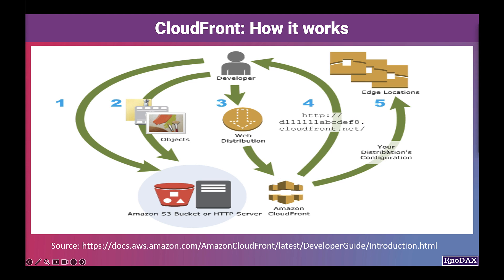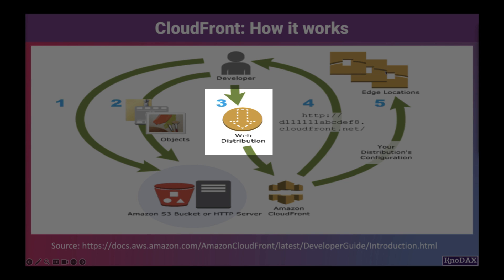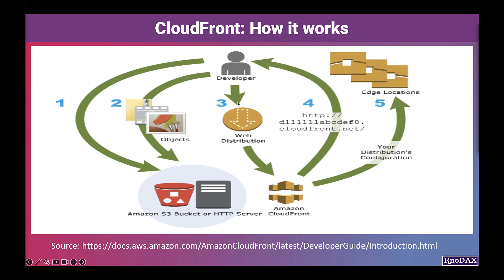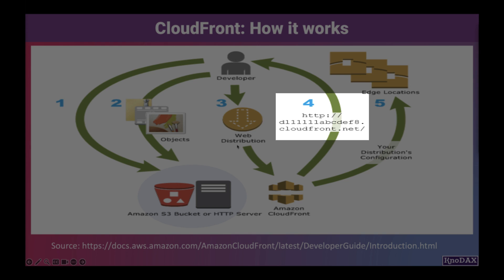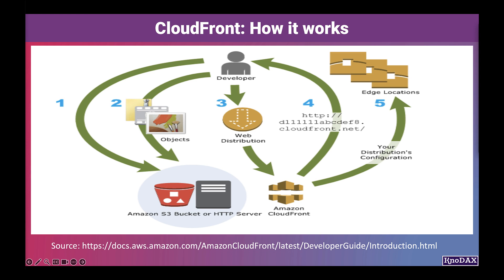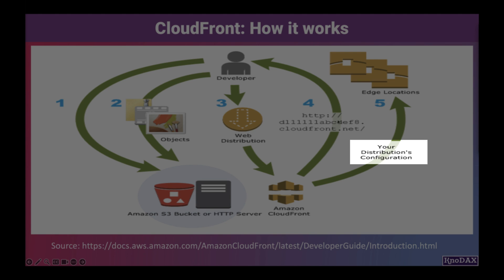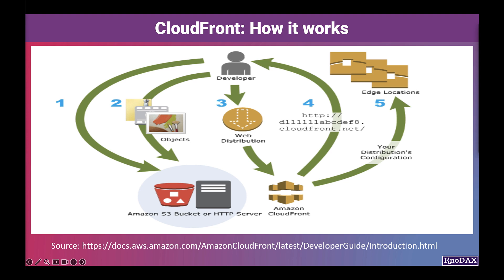Next, you create a CloudFront distribution, which tells CloudFront which origin servers to get your files from when users request content through your website or application. Next, CloudFront assigns a domain name to your new distribution. You can also add an alternate domain name to use instead. CloudFront sends your distribution's configuration, but not your contents, to all its edge locations where CloudFront caches copies of your files.